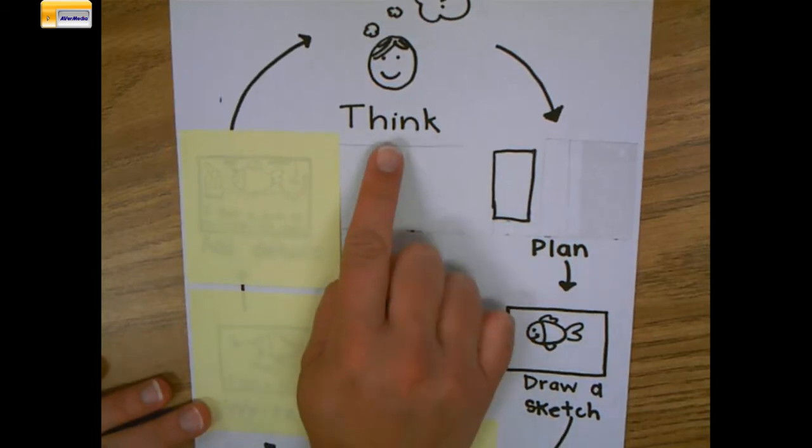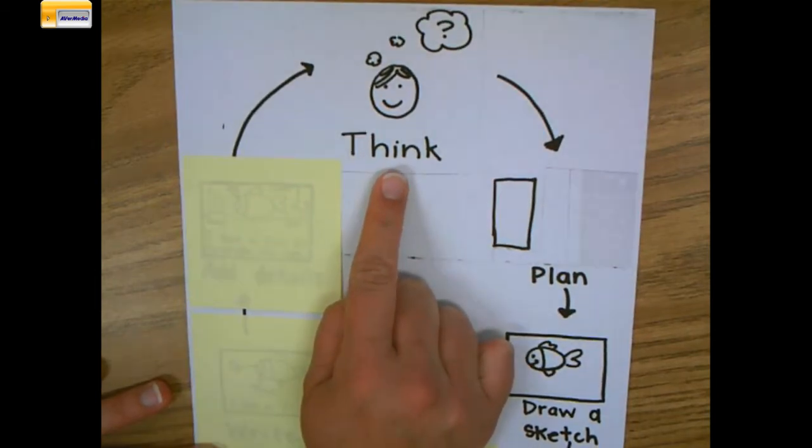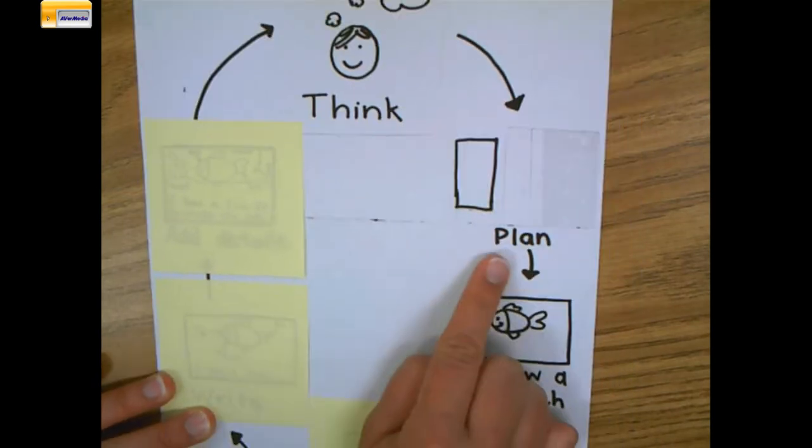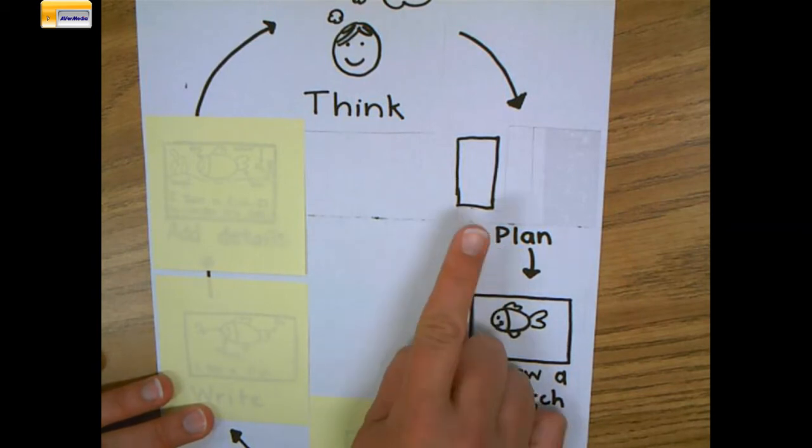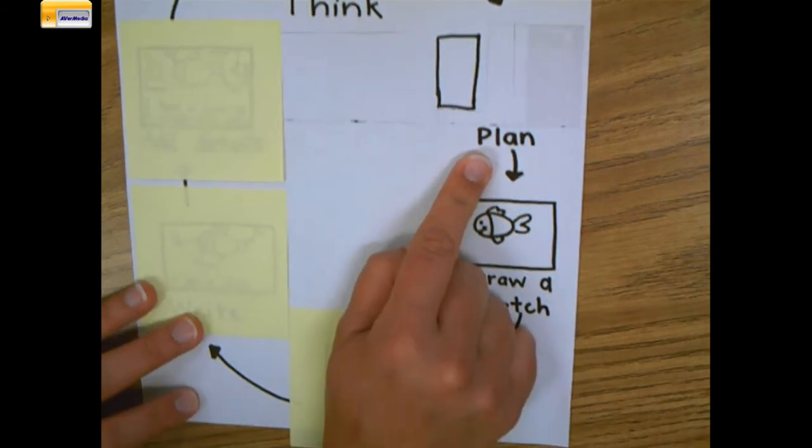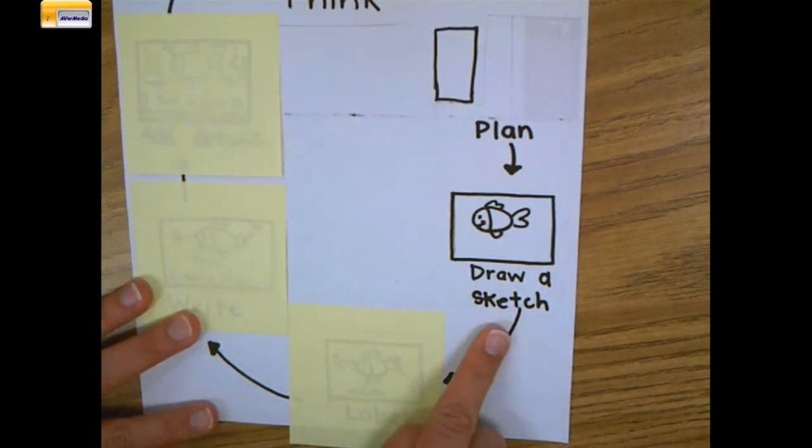The first step is to think. We're going to think about what our story or writing will be about today. The next step is to plan. We're using one piece of paper and we're going to plan what we want to write or draw. Then we want to draw a sketch or a quick picture to get our ideas on the paper.